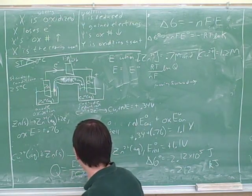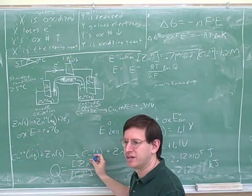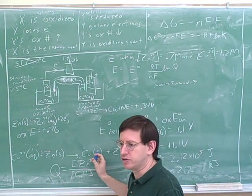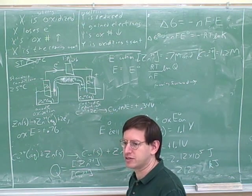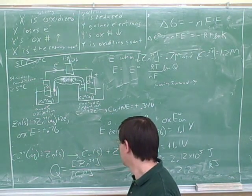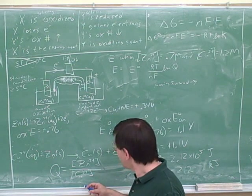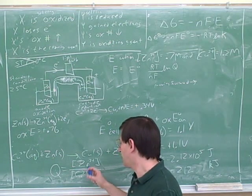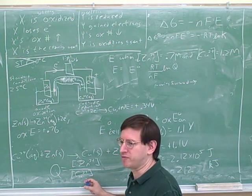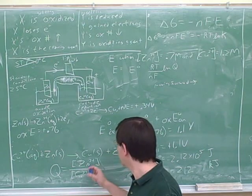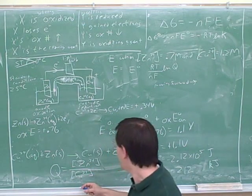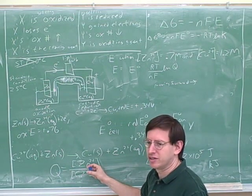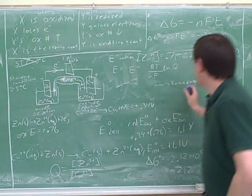Maybe we should just write down what Q would be for this equation. What's the general Q expression for this equation? That's good. Why didn't you include the copper solid? Yeah, we don't include pure solids or pure liquids. We're only going to include gases and aqueous species. Now, this is not necessarily based on the initial conditions. The Q at any point in time is just based on the concentrations at that point in time.